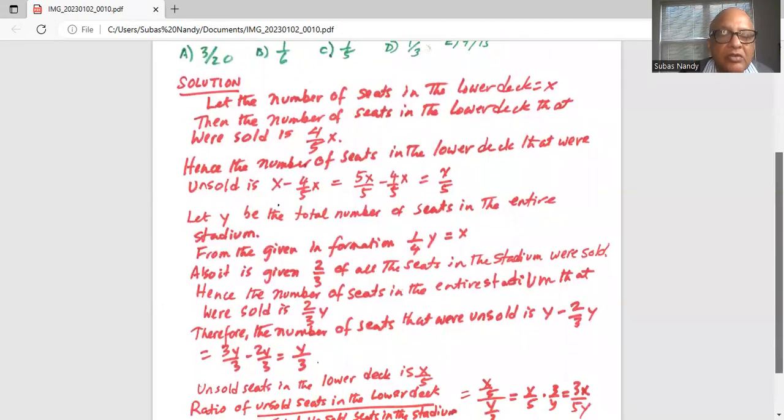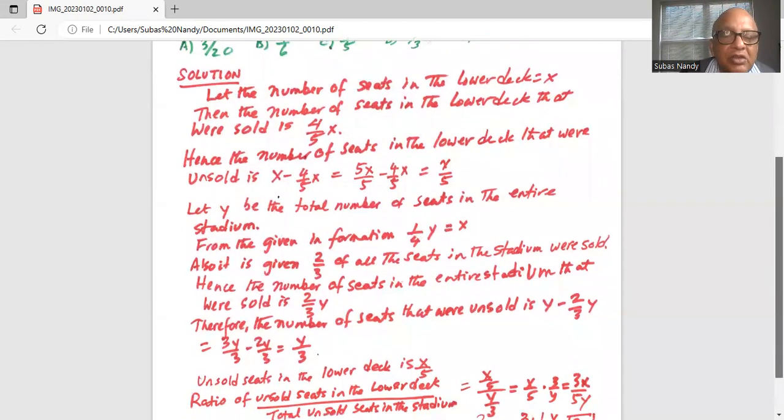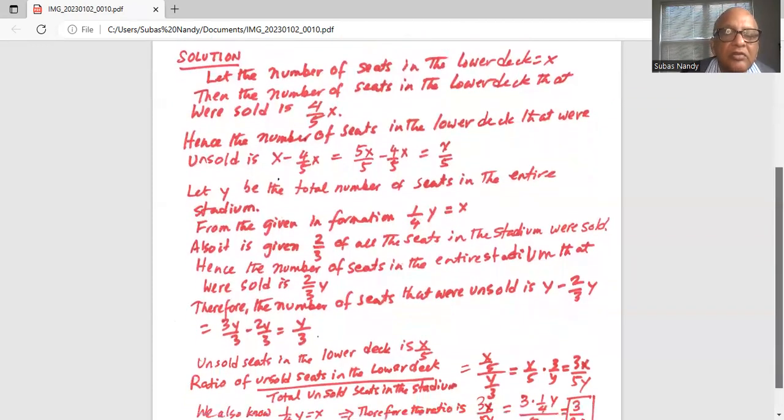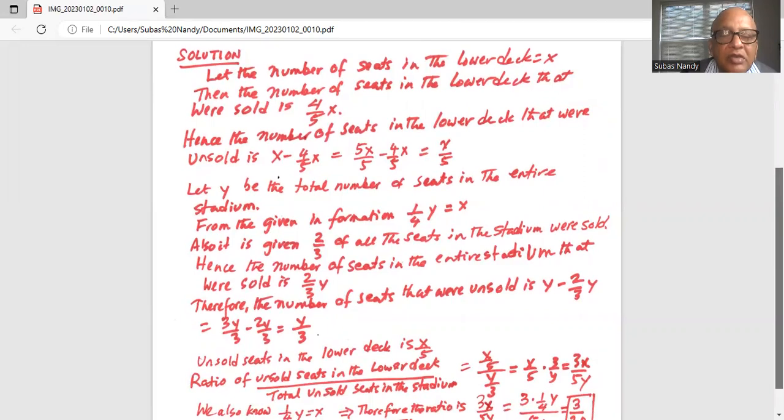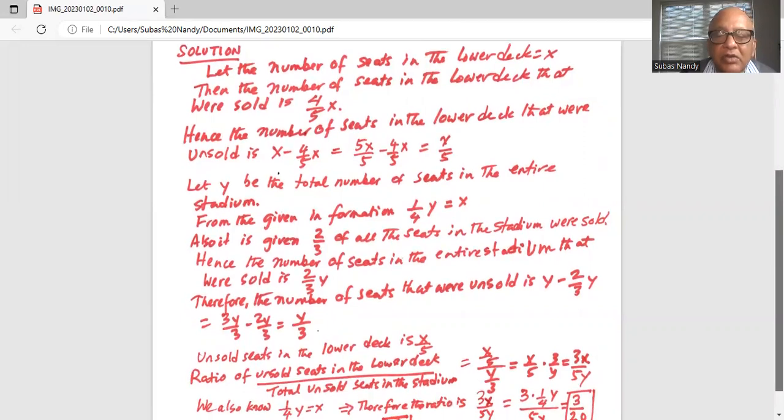Hence unsold seats in the entire stadium is y over three. Unsold seats in the lower deck is x over five. So ratio of the unsold seats in the lower deck divided by total number of unsold seats in the stadium is x over five divided by y over three, which is x over five times three over y, or three x by five y.